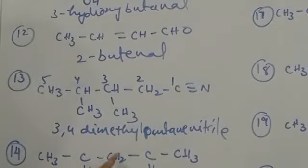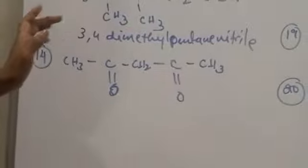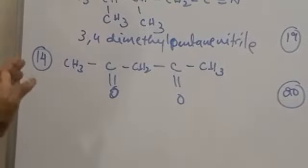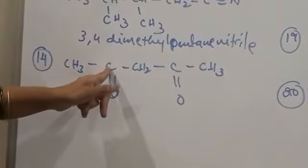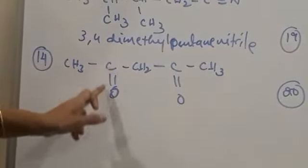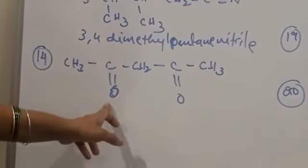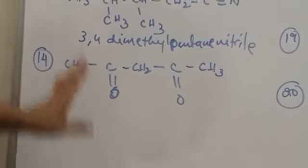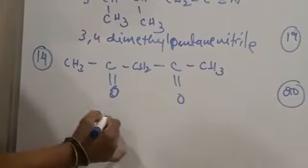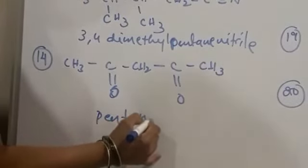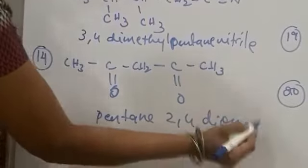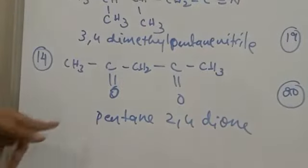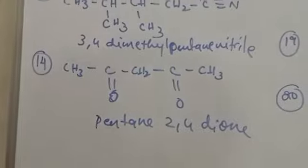Next: 1, 2, 3, 4, 5 — 5 carbons in the longest chain, so root word is pentane. At the second carbon and fourth carbon, the functional group is the ketone functional group. So the name is pentane-2,4-dione.